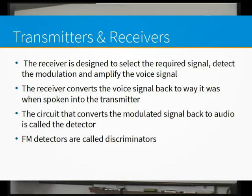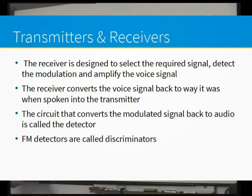If it's an AM receiver, it's demodulating using a detector. In FM, what we call a detector is a discriminator — it discriminates the voice out of the FM signal being received. So in AM it's a detector or demodulator; in FM it's a discriminator. If I say discriminator, you instantly know — that's FM.